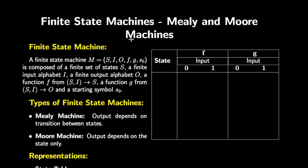In this video we will talk about the types of finite state machines. As a recap, a finite state machine is a combination of a finite set of states, a finite set of inputs, a finite set of outputs, a function f which maps from a pair of states and inputs to a state, and a function g which maps a pair of state and input to an output. It also has a starting symbol, typically denoted by s0.